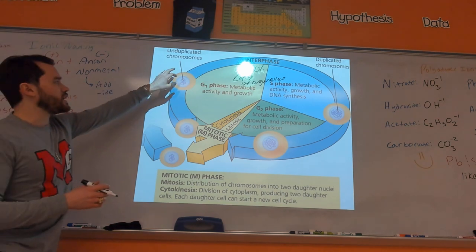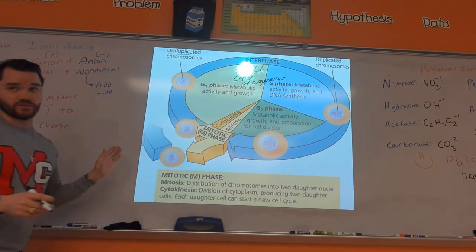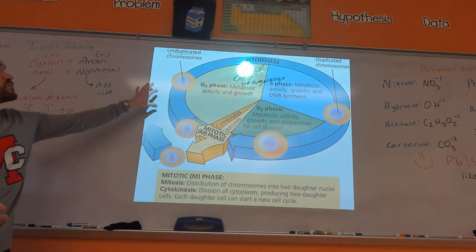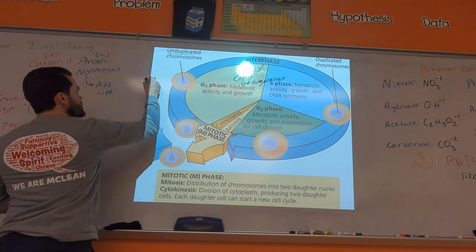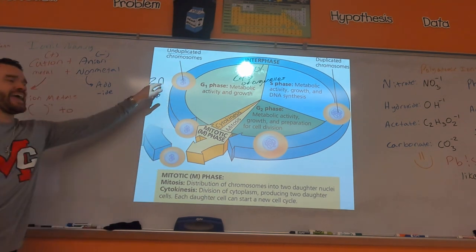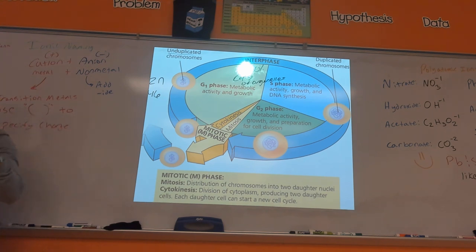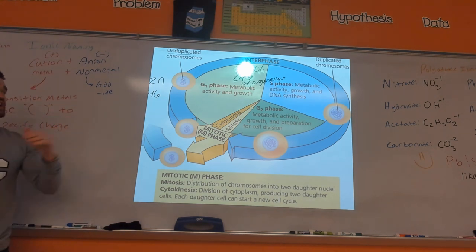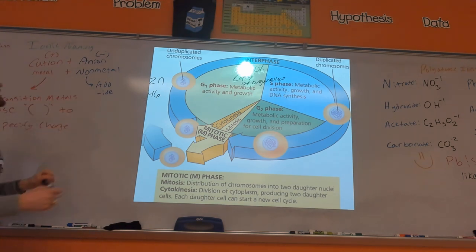Whenever you're in G1, these are unduplicated chromosomes. So keeping track of the chromosome number, the cell is at what we call 2N — N being one copy of all the chromosomes. Think of 23andMe: we've got 23 chromosomes. Our normal body cells are 2N.